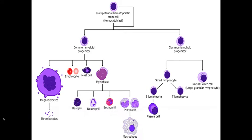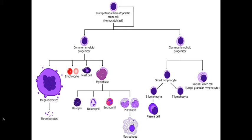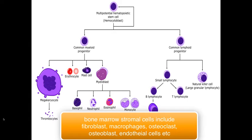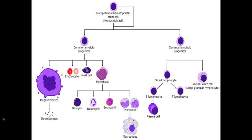The only red bone marrow you still have left as an adult is in your vertebrae, scapula, ribs, sternum, pelvis, skull bones, and the proximal portions of your humerus and femur. The red bone marrow has in its surrounding some stromal cells — meaning supporting cells — including fibroblasts, osteoblasts, osteoclasts, some macrophages, and others.